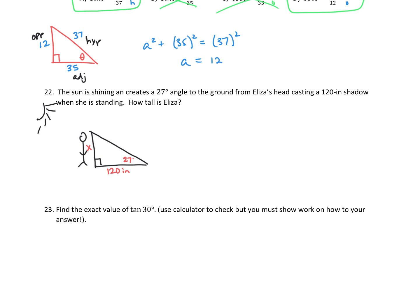In this triangle with the 27 degree angle, the hypotenuse is the side we're not going to use because we don't know anything about it. The X is the opposite side, and the 120 is the adjacent side. Thinking through SOH-CAH-TOA, which trig function uses the opposite and adjacent sides? That's our tangent function — tangent equals opposite over adjacent. So we set up: tangent of 27 degrees equals X over 120.